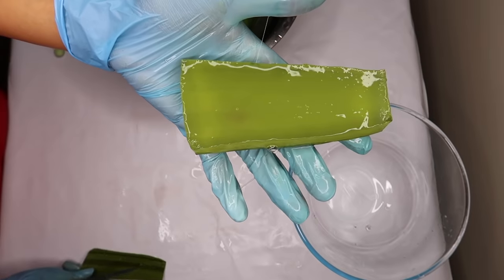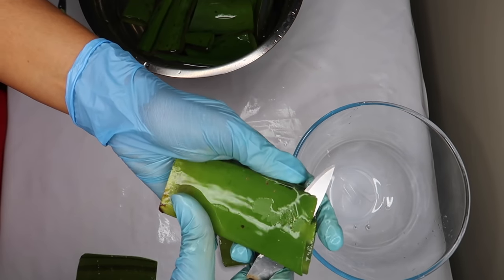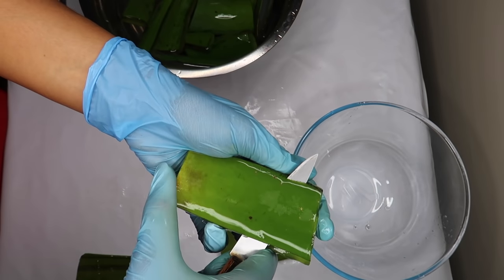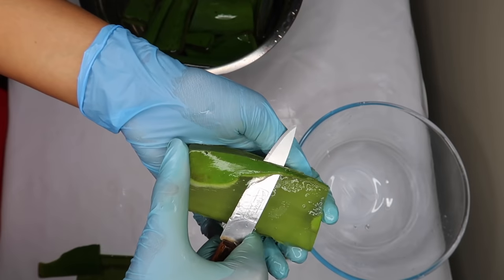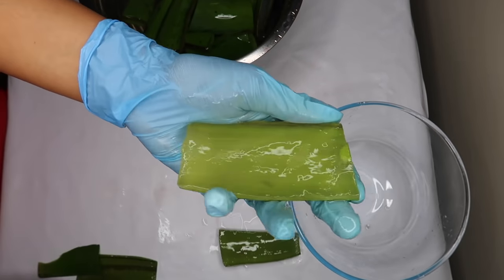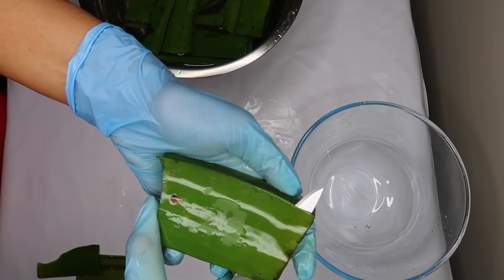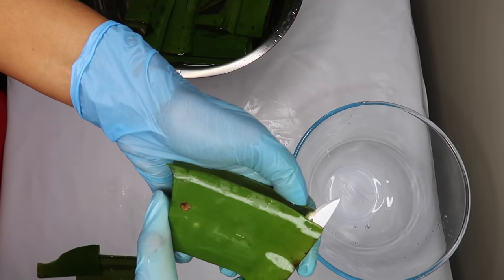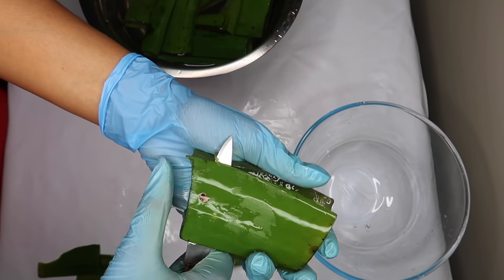Aloe vera is composed of 75 active constituents. Among them you can find vitamins, minerals, enzymes, sugars, fatty acids, antioxidants, lignin, saponins, antiseptic agents such as salicylic acid and amino acids.